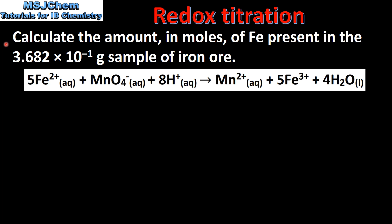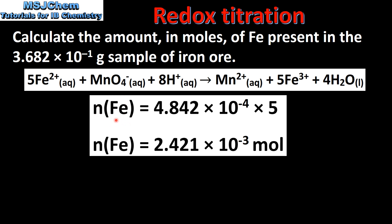In the next step we will calculate the amount in moles of iron present in the sample of iron ore. Here we have the overall redox equation for the reaction. To determine the amount in moles of iron we need to look at the molar ratio between the permanganate ion and the Fe2+ ion. As you can see from the equation, 1 mole of permanganate ions reacts with 5 moles of Fe2+ ions. So we multiply the amount in moles of the permanganate ion by 5, which gives us 2.421 × 10⁻³ moles.